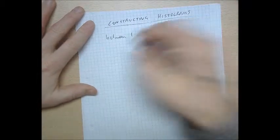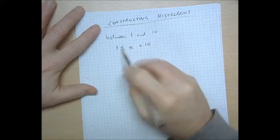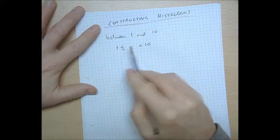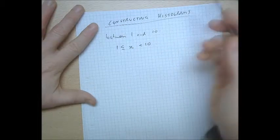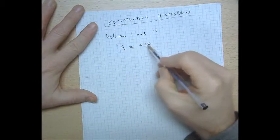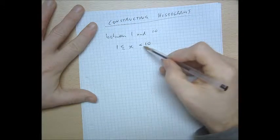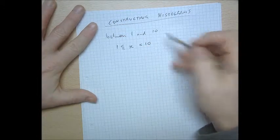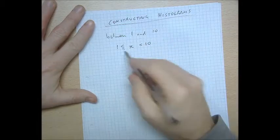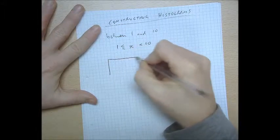Well, the maths version of the word between solves that. It uses these little devices because if a number is greater than 1 and it's also less than 10, it has to be in between. The fact that 1 is allowed is indicated by this bar, but the fact that 10 is not allowed is indicated by the absence of a bar there. Now, if you remember that that is the maths device for the word between, a histogram is very easy to get started.